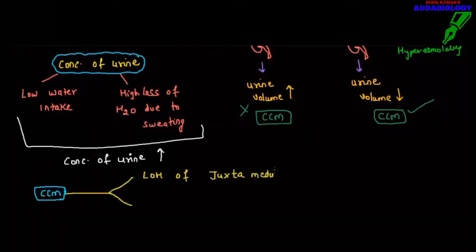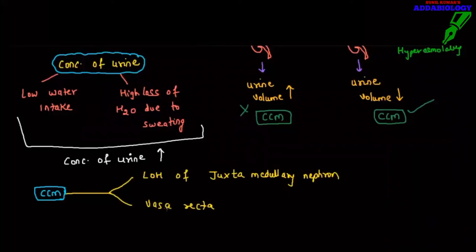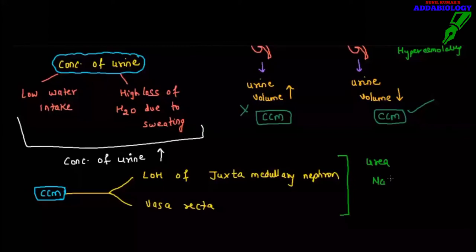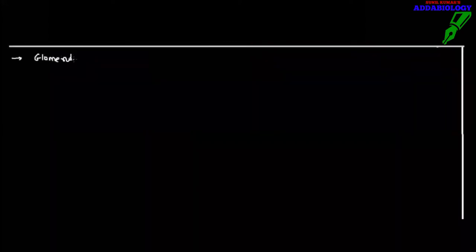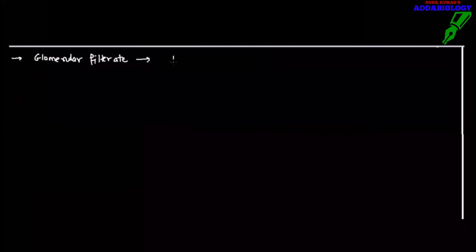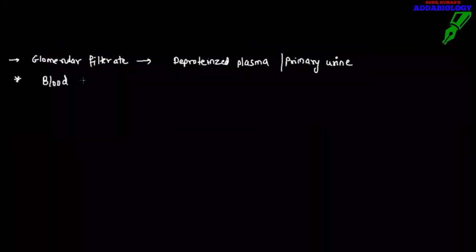Counter current mechanism takes place between two important factors: one is the loop of Henle of the juxtamedullary nephron, and the second is the vasa recta. Even the collecting tubule is also involved. This is how the salt and urea concentration is maintained by this counter current mechanism — similar to how we studied the RAS system. Glomerular filtrate is nothing but deproteinized plasma, which can also be called primary urine.